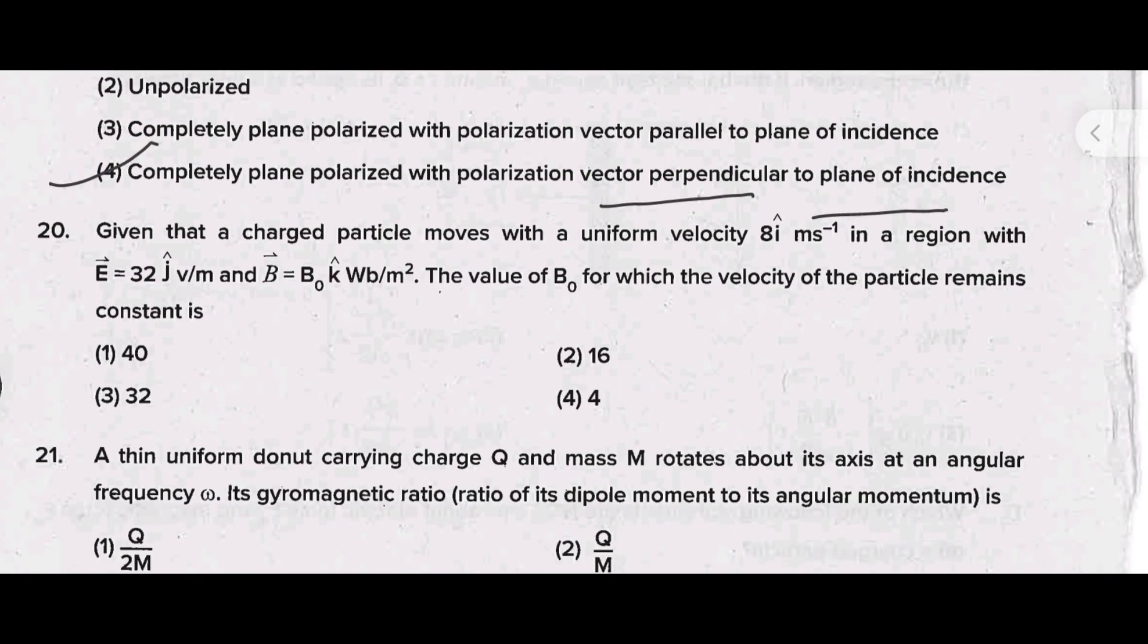Given that a charged particle moves with a uniform velocity 8i cap meters per second in a region with E equal to 32j cap volt per meter and B equal to B naught k cap weber per meter square, the value of B naught for which the velocity of the particle remains constant is - the correct answer is option 4.